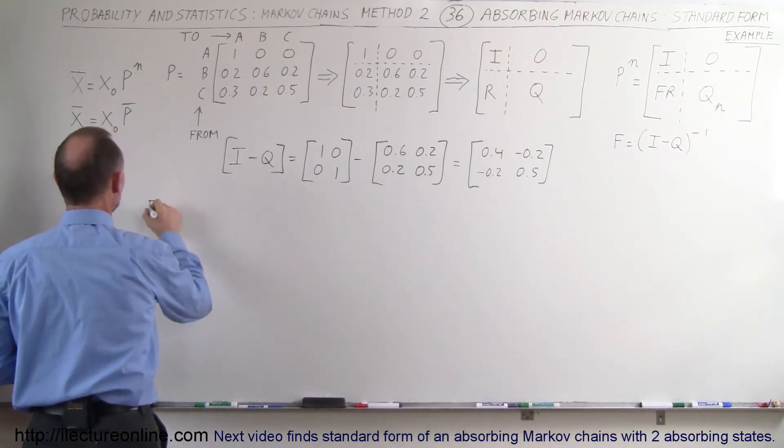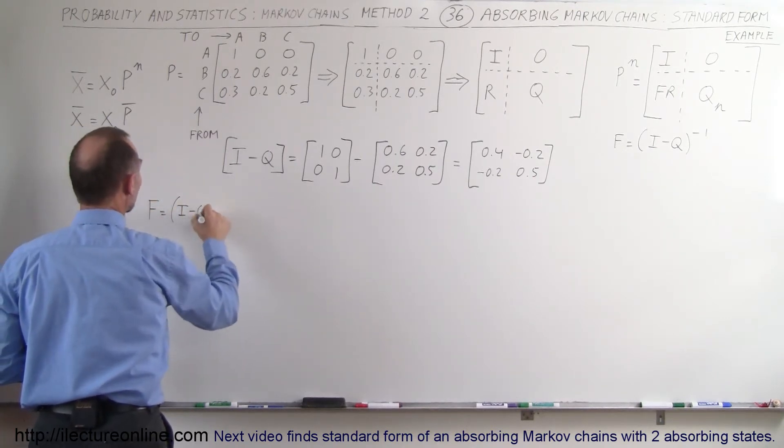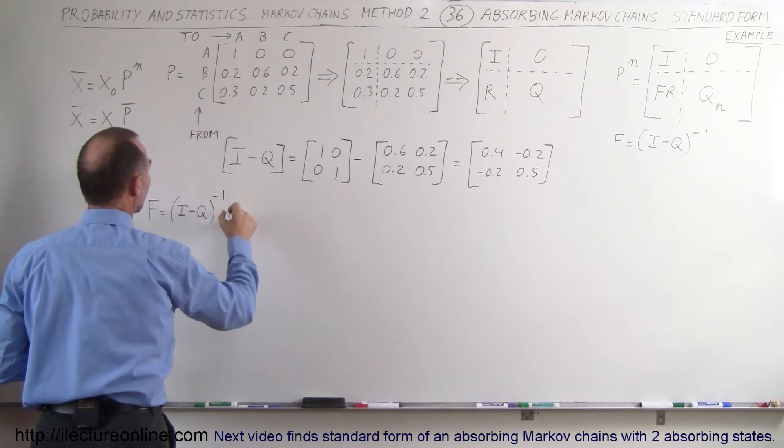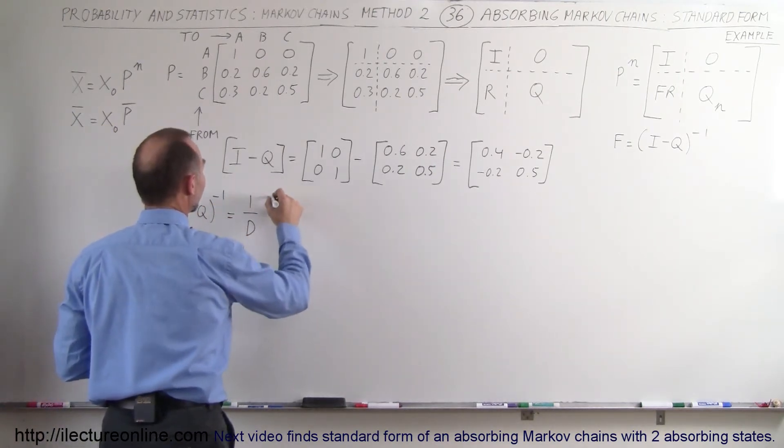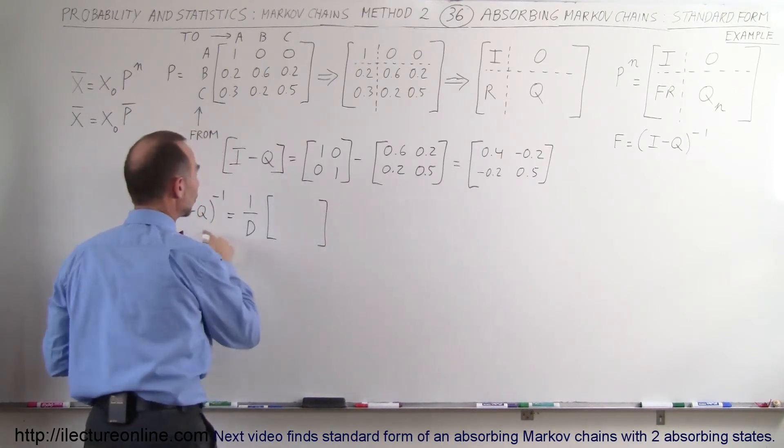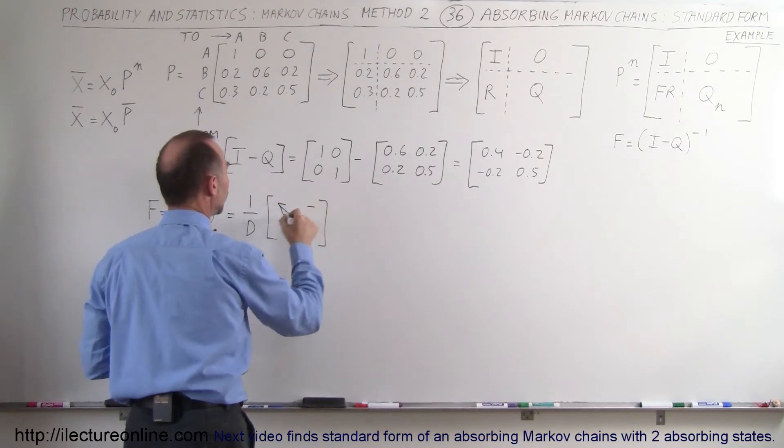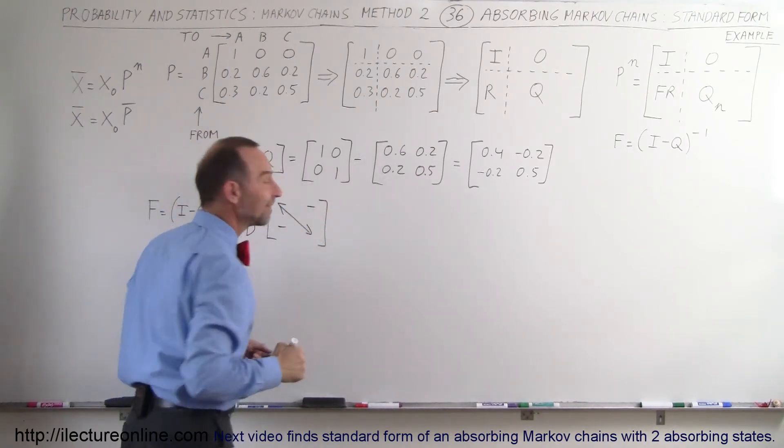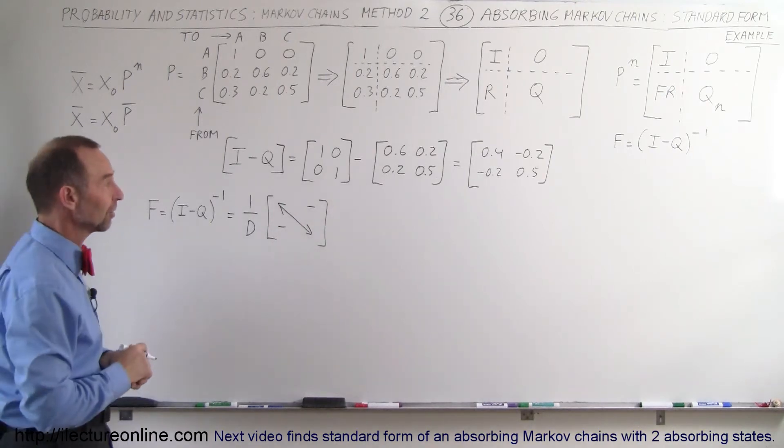So the fundamental matrix which is equal to I minus Q to the minus 1 power, which is equal to 1 over the determinant times the matrix I minus Q where these two elements exchange position and those two elements are changed in sign. So if these are positive you turn them negative and if negative you turn them positive.